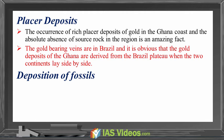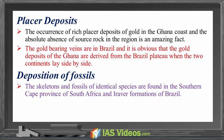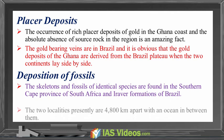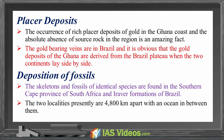Distribution of Fossils. The skeletons and fossils of identical species are found in the southern Cape Province of South Africa and Arara formations of Brazil. The two localities are presently 4,800 km apart with an ocean in between them.